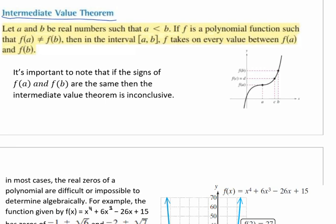The Intermediate Value Theorem says that you let A and B be real numbers such that A is smaller than B. If the function f is a polynomial function such that f(A) does not equal f(B), then in the interval from A to B, the function f takes on every value between f(A) and f(B).